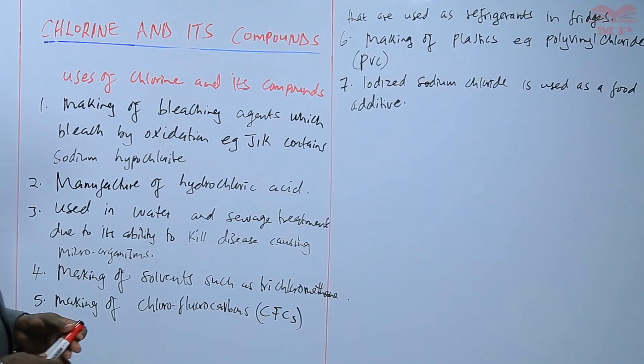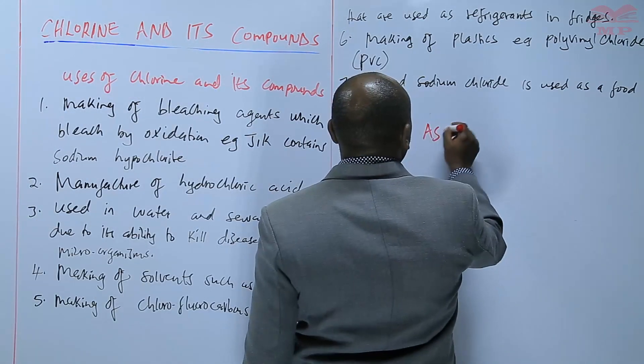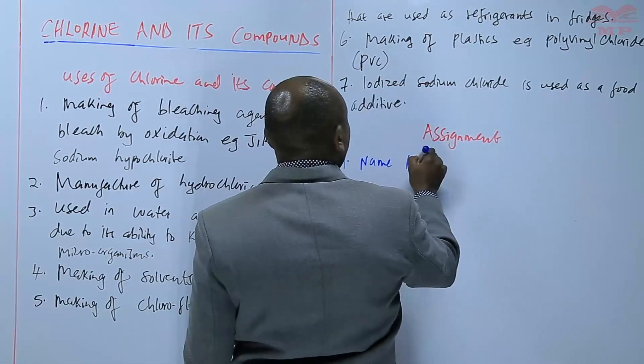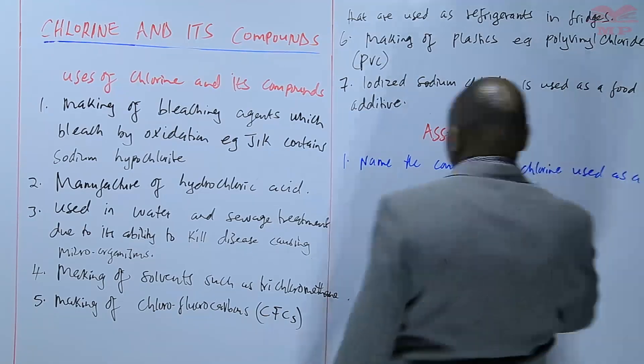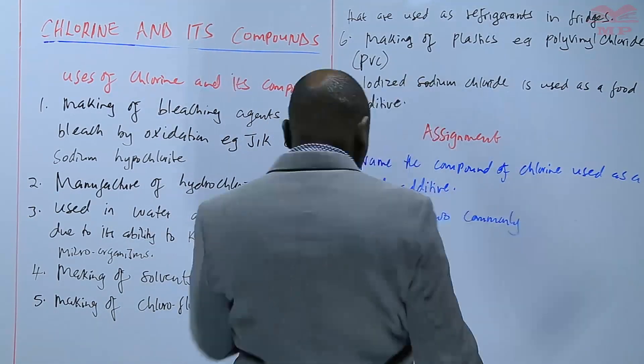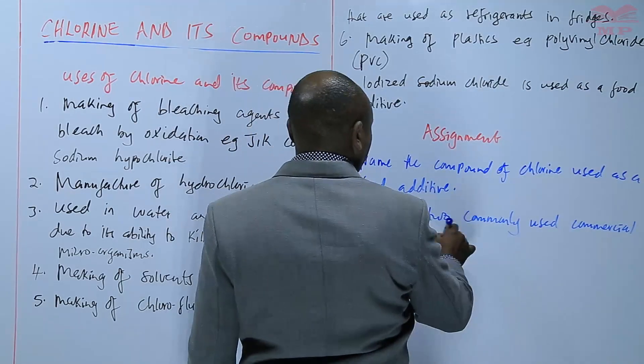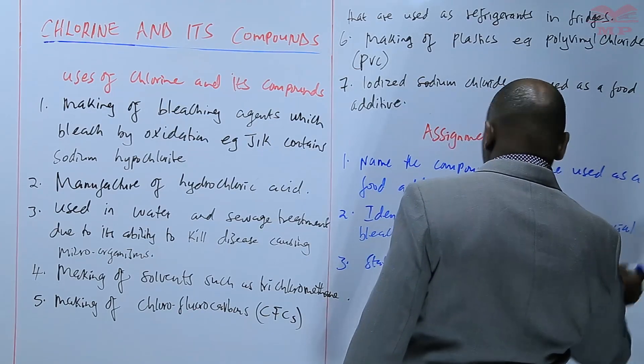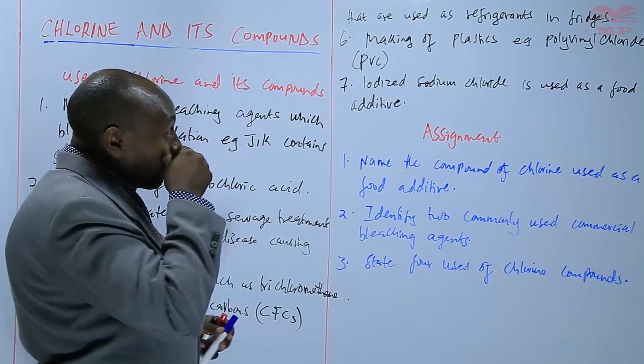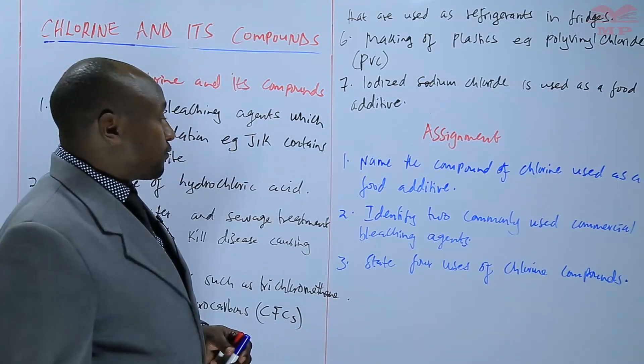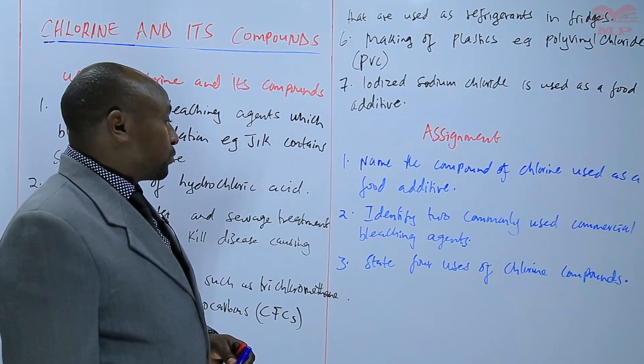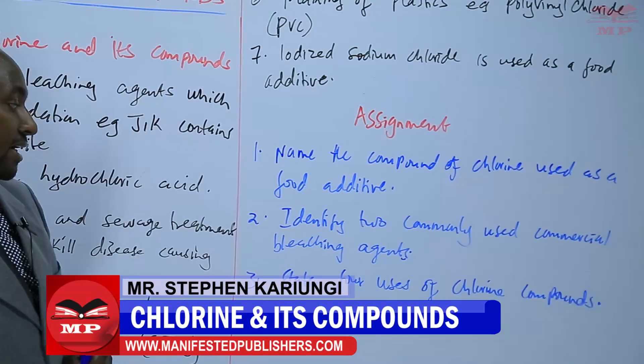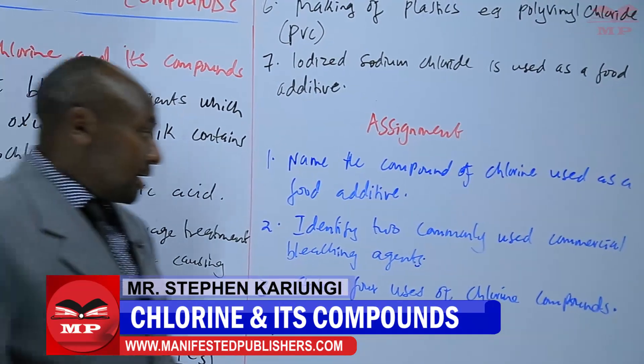So the first question: name the compound of chlorine that is used as a food additive. Number two: identify two commonly used commercial bleaching agents. And three: state four uses of chlorine compounds. So we'll stop there.